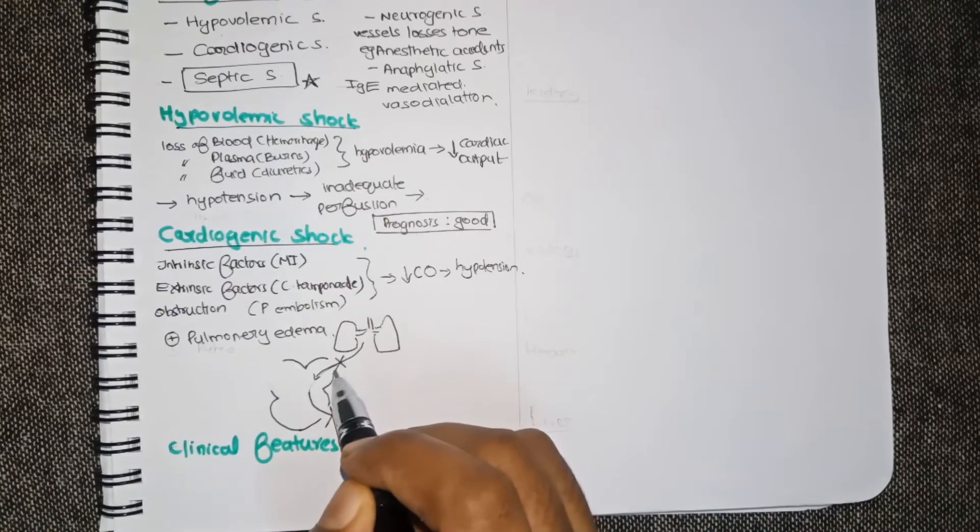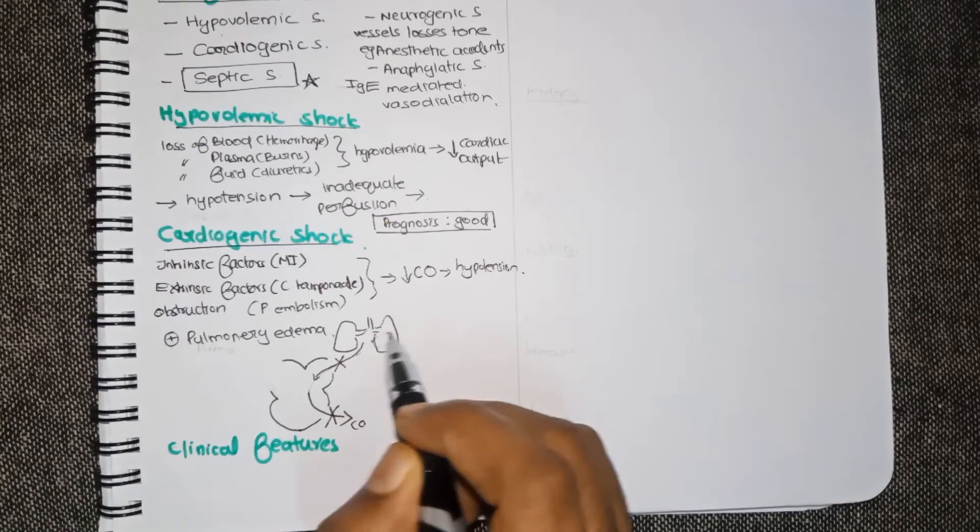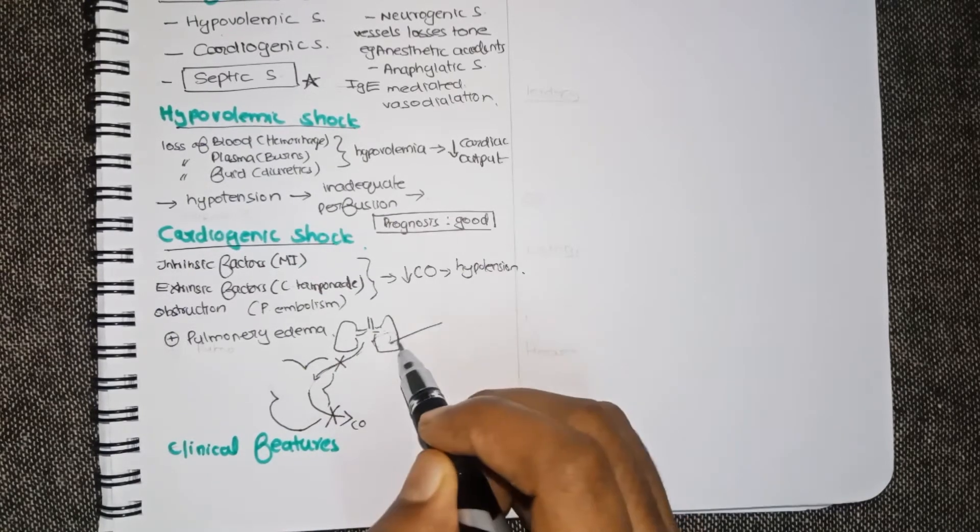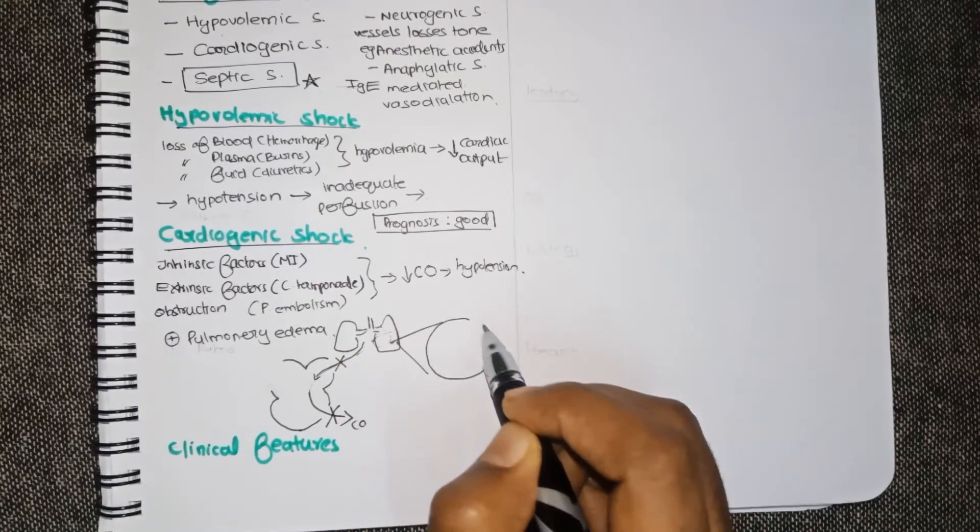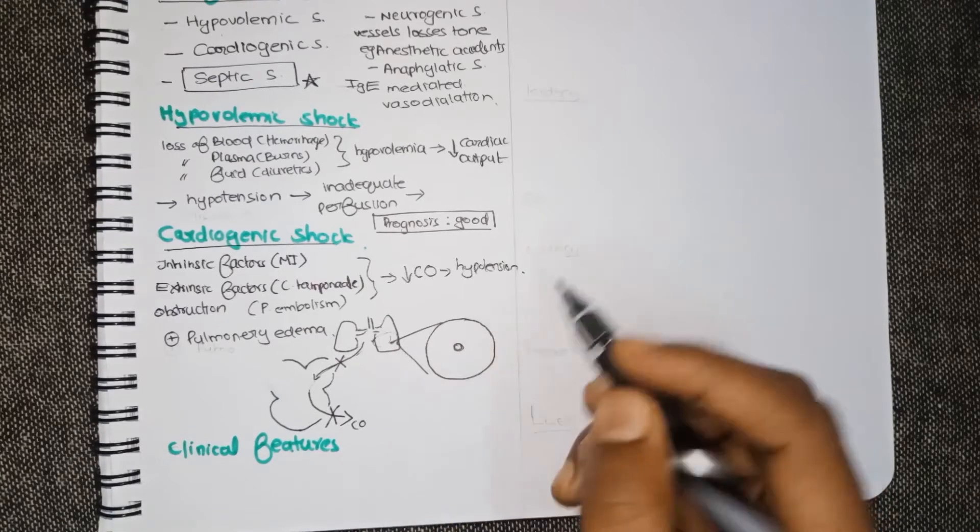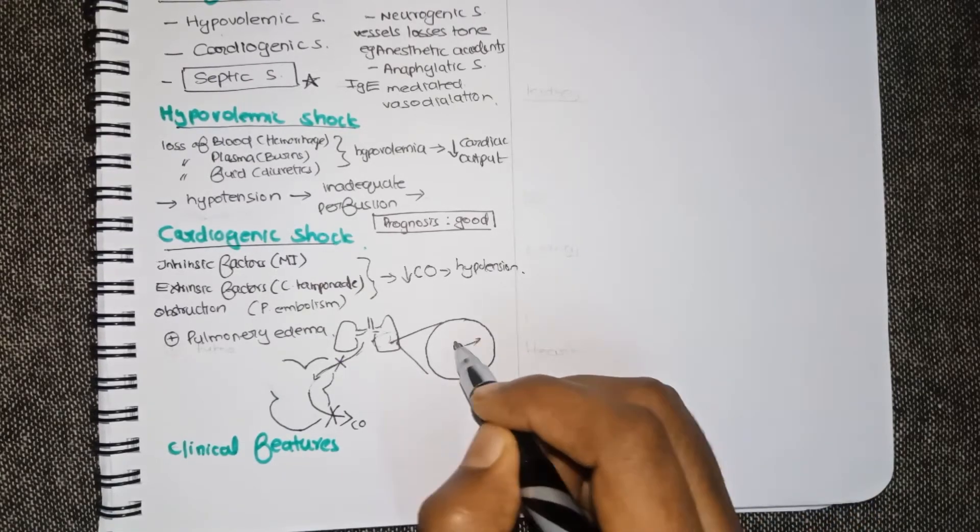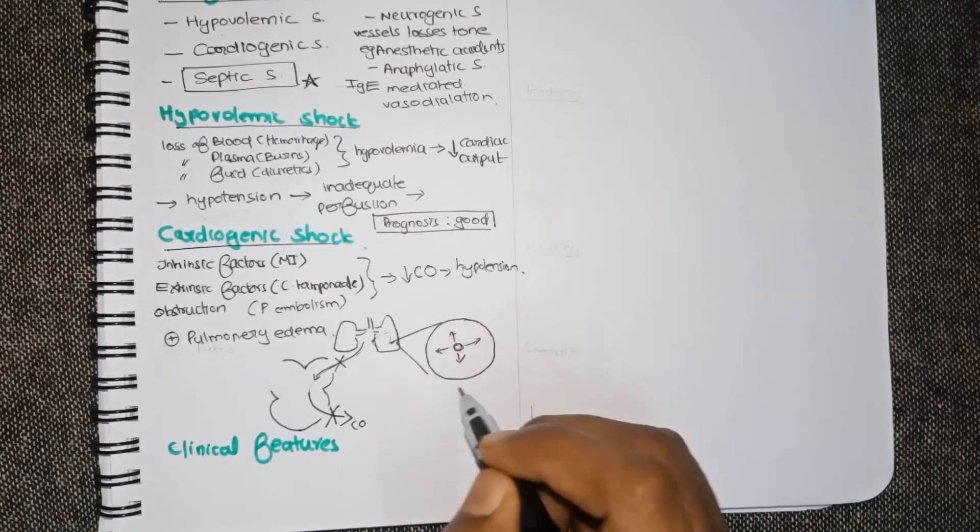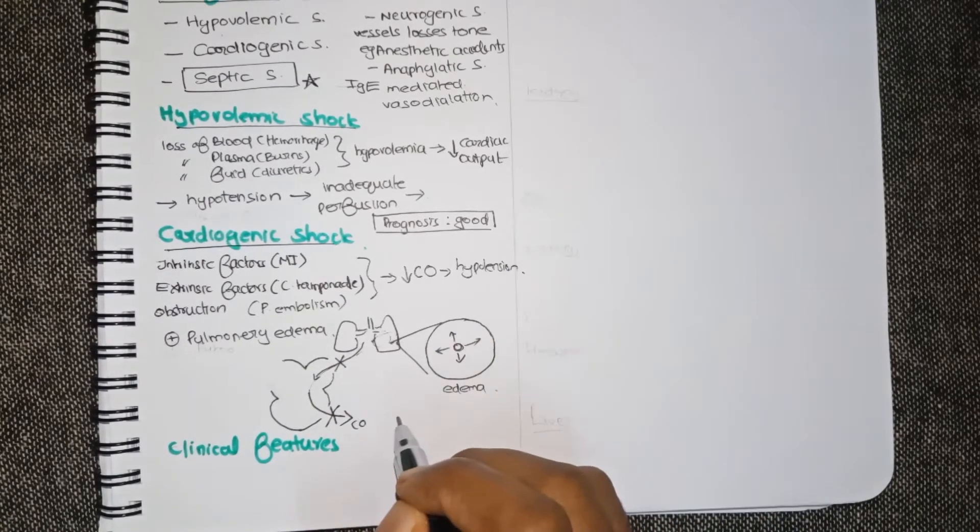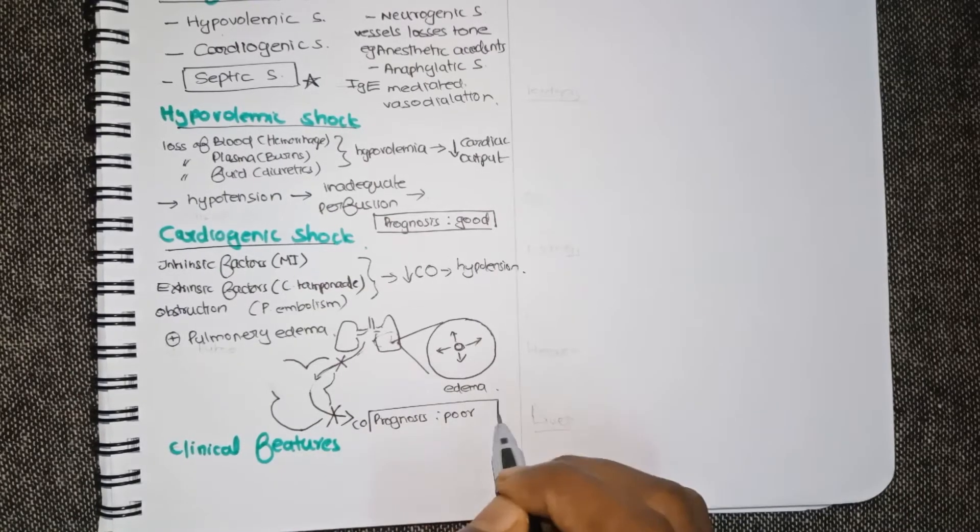As a result a high pressure is being built up inside the lungs. The increased hydrostatic pressure results in fluid moving from the blood into the interstitium of the lungs. This results in pulmonary edema. The prognosis of cardiogenic shock is usually poor.